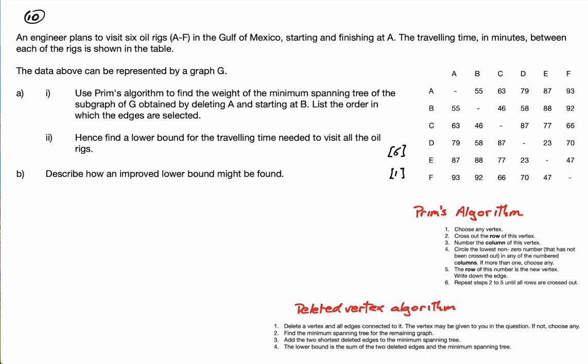Okay, question 10. An engineer plans to visit six oil rigs A to F in the Gulf of Mexico, starting and finishing at A. The traveling time in minutes between each of the rigs is shown in this table. The data above can be represented by a graph G.